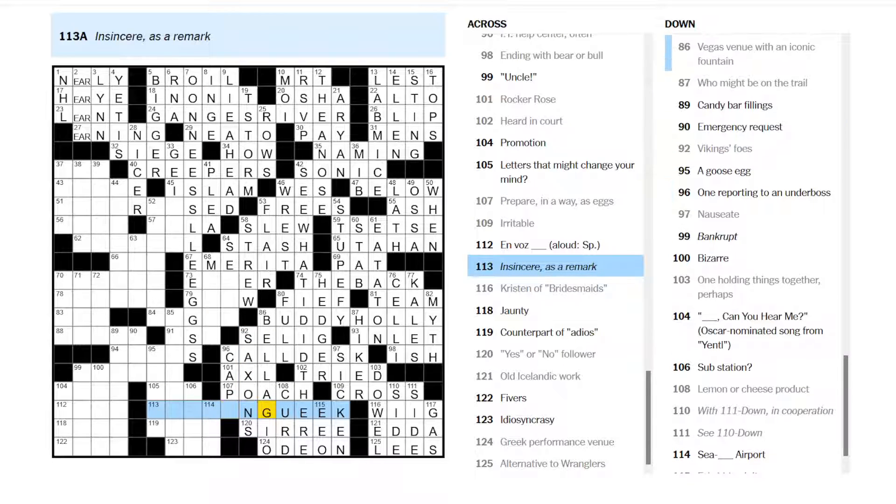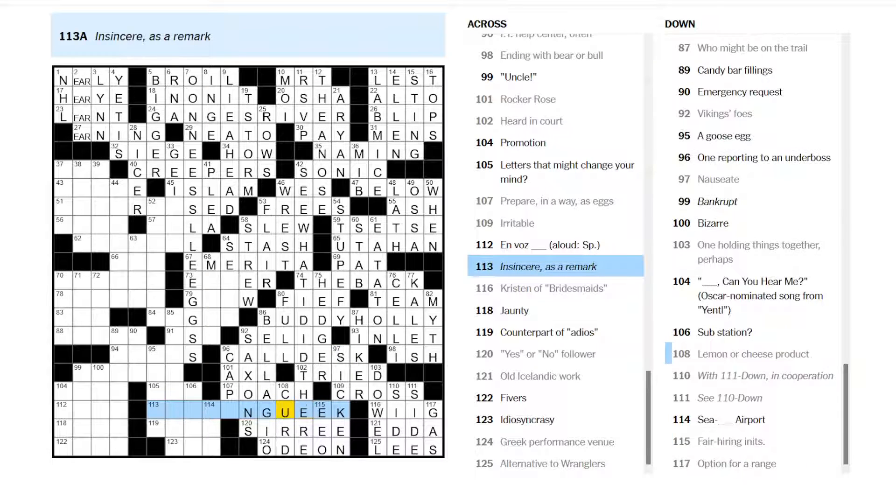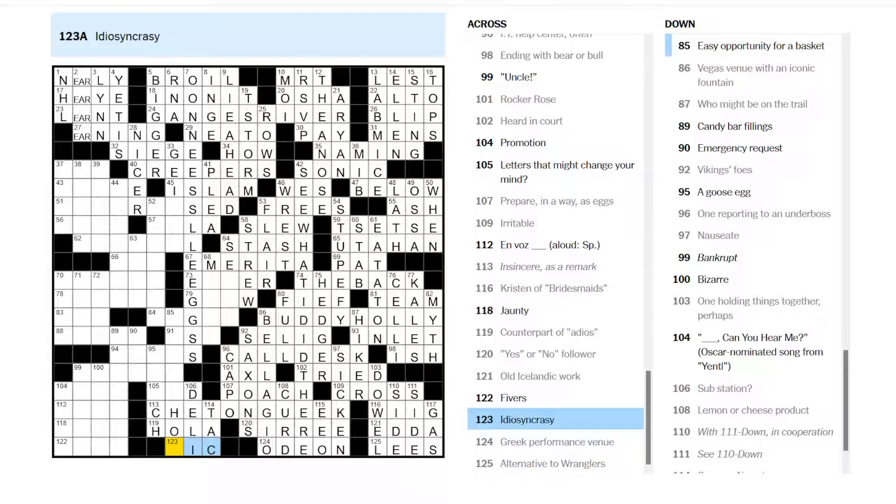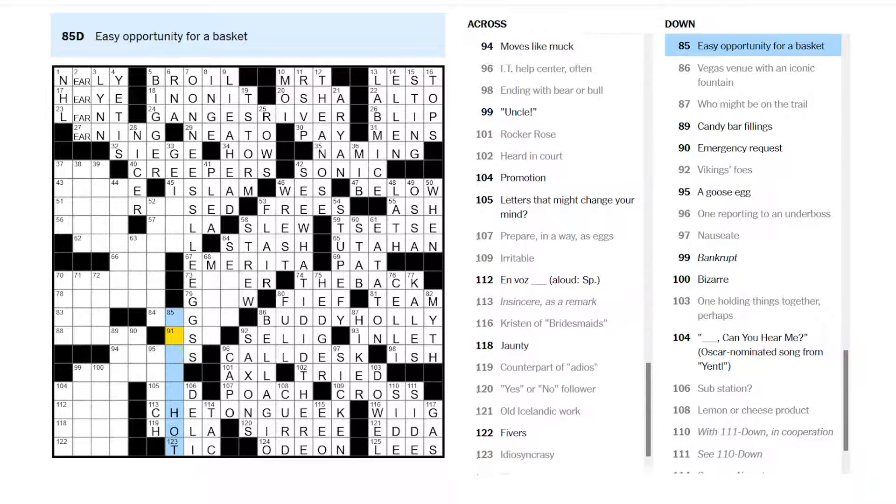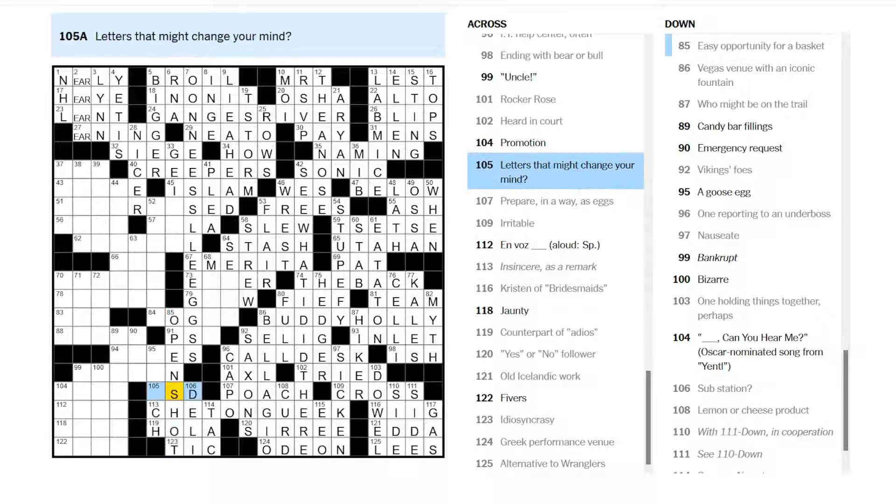Vikings foes are the Saxons. Insincere as a remark. And this is weird. Tongue in cheek. Is what that is. Okay. SeaTac. Seattle Tacoma Airport. Counterpart of Adios. Hola. Sub Station could be a deli. You get a deli at a sub. And Idiosyncrasy is a tick.